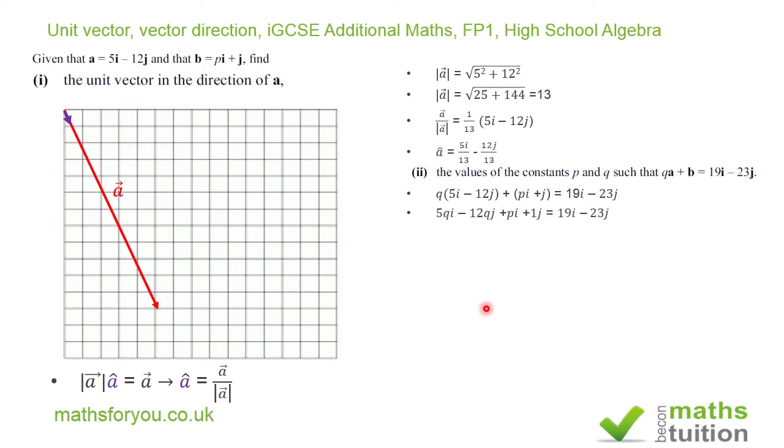Expand the brackets and we then have 5qi minus 12qj plus pi plus 1j. Now I'll put 1j there but that makes life easier for me when I come to do the calculation. And that's equal to 19i minus 23j.